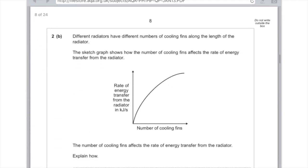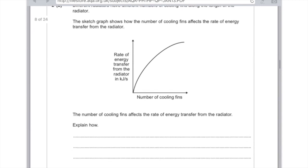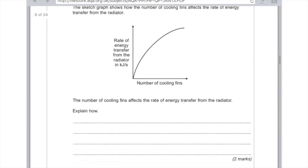Different radiators have different numbers of cooling fins along the length. The sketch graph shows how the number of cooling fins affects the rate of energy transfer. Explain how. The fins increase the surface area and therefore increase the rate of energy transfer.